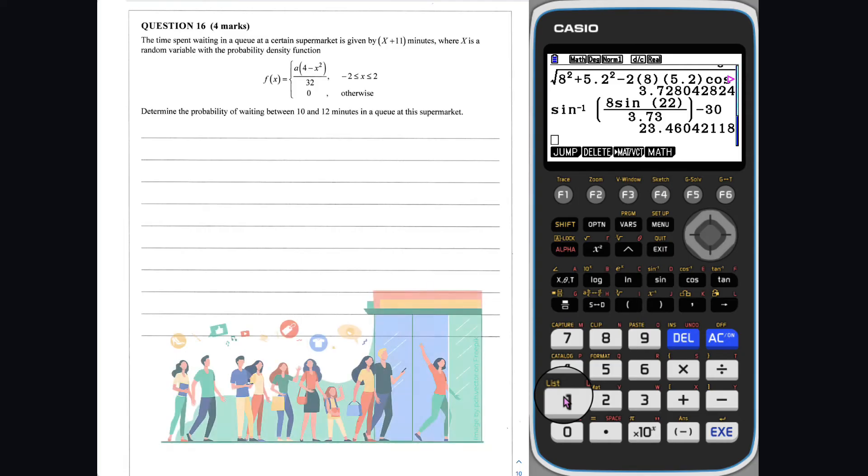Question 16. We need to determine the probability of waiting between 10 and 12 minutes in a queue at the supermarket. Waiting 10 minutes is equivalent to an x of negative 1, and waiting 12 minutes is equivalent to an x equal to 1.